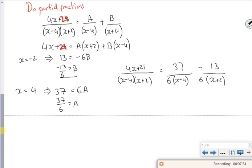So that gives me 4x plus 21. Sorry about the 19 before. So it's 37 over 6 lots of x minus 4 and it's minus 13 over 6 lots of x plus 2. There's another way of doing it. I do it with comparing coefficients and stuff. But, you know, there we go, I'm using that one in the pack.